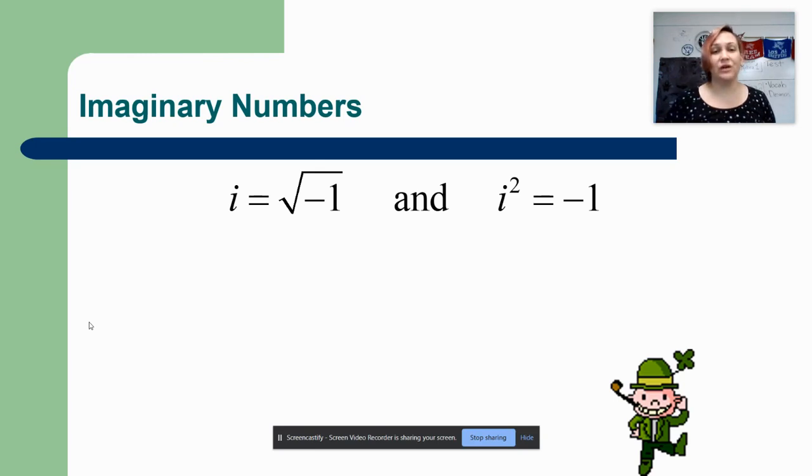Now you cannot take the square root of a negative number in the real world because when you're looking for square roots you're looking for a pair of numbers that are exactly the same. But to get a negative answer you would need one positive number and one negative number and those are not exactly the same, so that's why we can't take the square root of negatives.